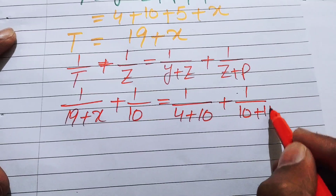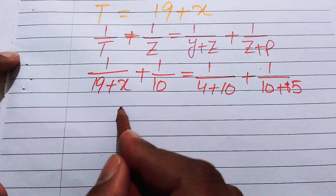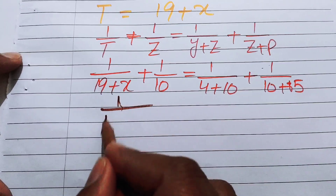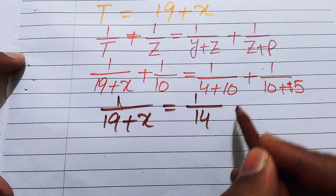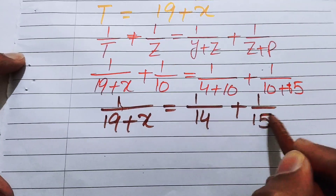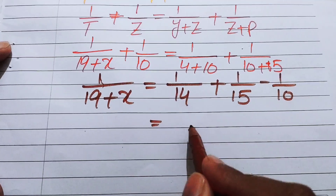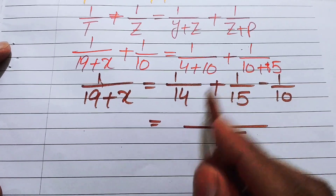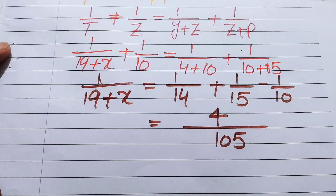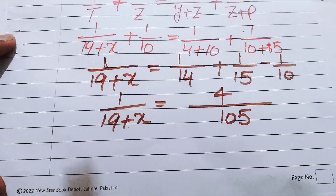We move 1/10 to the right-hand side: 1/(19 + x) = 1/14 + 1/15 − 1/10. Taking the LCM of all terms on the right-hand side, the LCM is 210, and when solved we get 4/105 on the right-hand side.